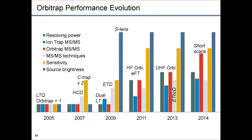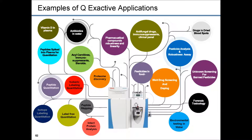This is how Orbitrap technology has progressed over the last 10 years. Starting from the performance of the LTQ Orbitrap, following different analytical parameters: the brightness of the source increased by an extraordinary amount, sensitivity of Orbitrap detection by a factor of 7, speed of Orbitrap MSMS by a factor of 8, and resolving power in one second by a factor of 5 — sort of trying to defeat Moore's law. These are just different applications of this tandem instrument.